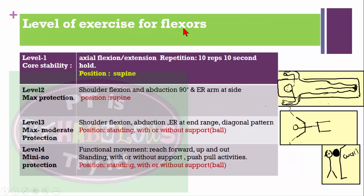Exercise levels for cervical flexor core stability: Level 1 — axial flexion or extension, 10 repetitions, 10-second hold, supine position. Level 2 (maximum protection phase) — shoulder flexion and abduction up to 90 degrees, external rotation of the arm at the side, supine position. Level 3 — flexion, abduction, external rotation with a full-range diagonal pattern, gradually progressing to standing with a ball behind the neck, with or without support.